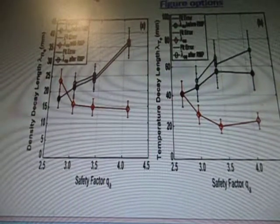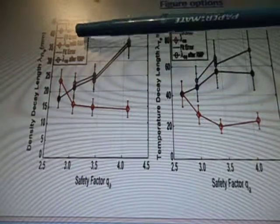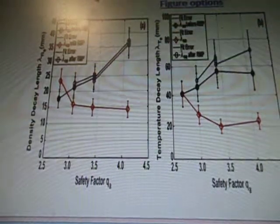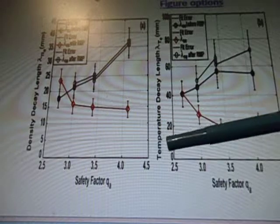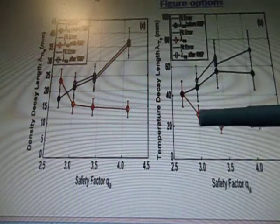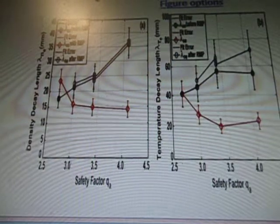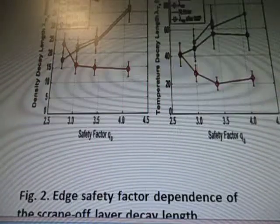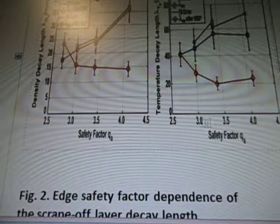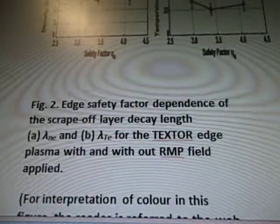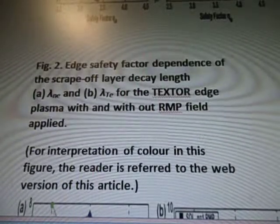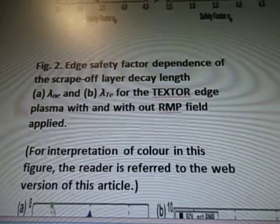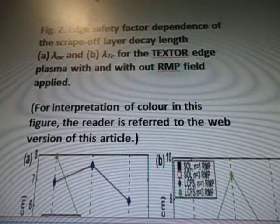Here's another set of diagrams. It says fit error before RMP, fit error with RMP, fit error after RMP. On the left it says density decay length, temperature decay length, safety factor 2A. This is A and B — it's got numbers 2.5 to 4.5 and then 0 to 100. Edge safety factor dependence of the scrape-off layer decay length for the TEXTOR edge plasma with our RMP field applied. For interpretation of color in this figure, the reader is referred to the web version of this article.